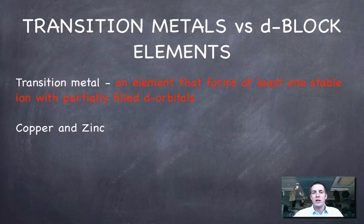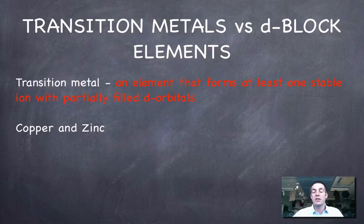Now when it comes to defining transition metals and what they are and what d block elements are there is a small difference between the two because although all transition metals are d block elements not all d block elements are transition metals. And that lies, well the explanation for that lies in the definition of what a transition metal is and that is to say it's an element that forms at least one stable ion with partially filled d orbitals.